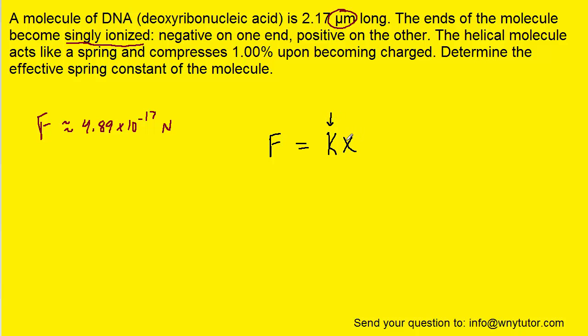And then we have the distance that the spring compresses when that force is applied. Now, the question notes that the spring compresses 1%. So what we have to do is take 1% of this distance right here in order to calculate x. Now, of course, to take 1% of a value, we have to convert it into a decimal. So 1% expressed as a decimal is 0.01. And then we're going to multiply that by the distance. Let's once again put it in the standard unit of meters by multiplying by 10 to the minus 6. And when we perform that calculation, we can see that x turns out to be 2.17 times 10 to the minus 8 meters. So that's the value of x.